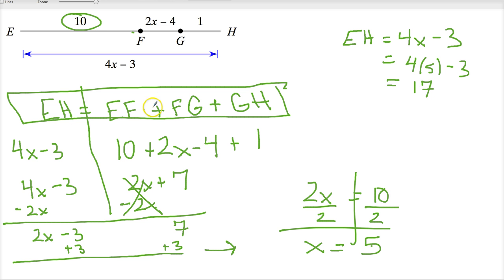And I could go back and test my theory now. This is 10, this is 1, this is 17. So 2x minus 4, which would be what FG is. You do 2 times 5 minus 4 or 10 minus 4, which is just 6. So I'd put that here. 10 plus 6 plus 1 does equal 17, so it does make the statement true.